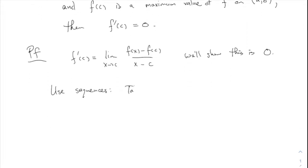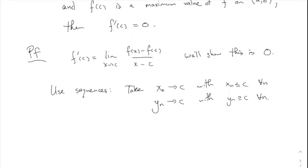Take a sequence XN approaching C with XN less than or equal to C for all N, and another YN approaching C with YN greater than or equal to C for all N. This is possible precisely because C is not an endpoint of the open interval, so we can choose points approaching from below and also from above. The XNs are less than C, and the YNs are greater.